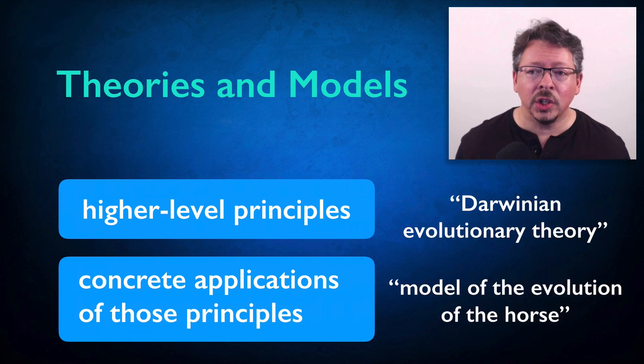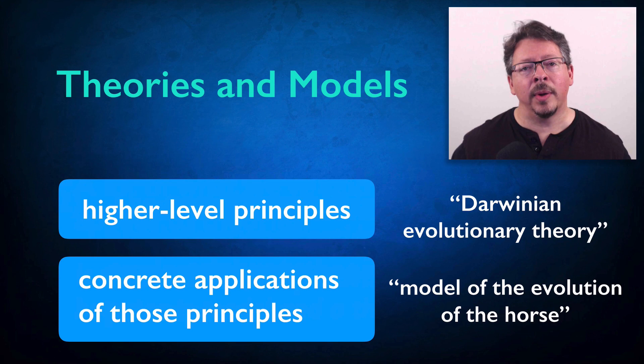Switching over to biology, we commonly talk about the basic principles of Darwinian evolutionary theory. And then we talk about specific models of evolutionary phenomena, like the evolution of a taxonomic category, like the horse, or the evolution of a reproductive strategy, like male versus female mate selection.